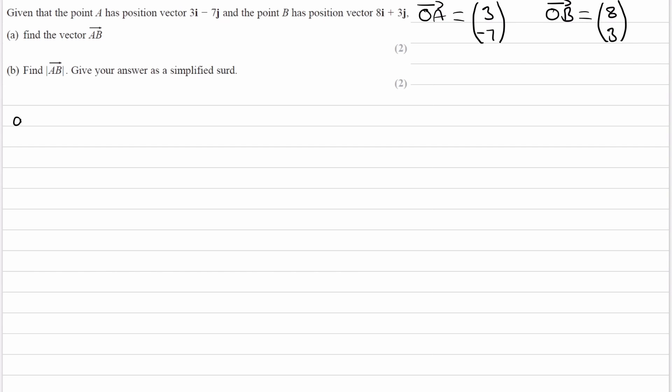For part A, we're trying to work out what the vector AB is. So for this, I'm going to draw a diagram. This is not to scale. Let's just consider two points, A and then B. And then I'm going to draw the origin in some random place as well. So here is the origin.